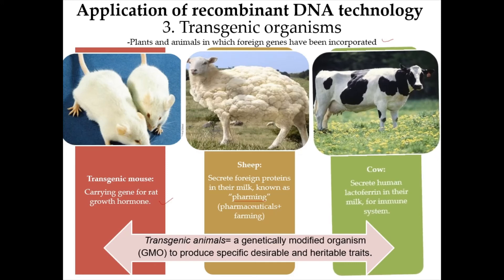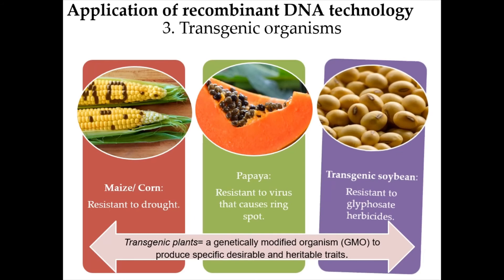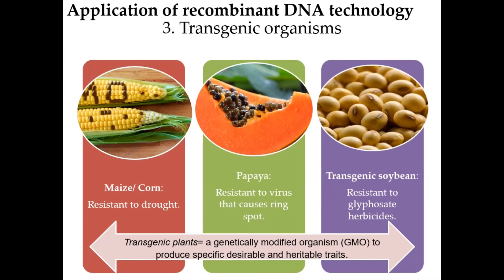The third example in transgenic animals is cows that secrete human lactoferrin in their milk, which can boost the immune system. For transgenic plants, examples include maize or corn resistant to drought, papaya resistant to the virus that causes ring spot, and transgenic soybean resistant to glyphosate herbicides.